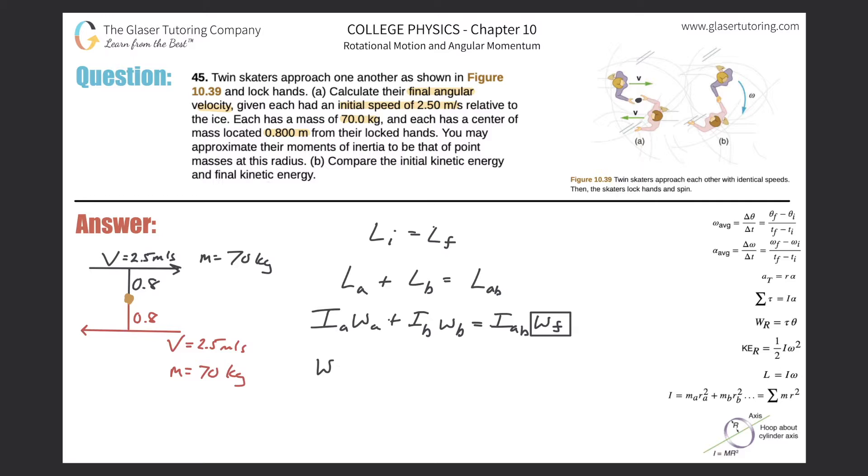So omega F is going to be equal to IA omega A plus IB omega B, all over IAB. So now we have to expand on these things. They told us to take their moments of inertia to be that of point masses at this radius. So it's basically approximated by the hoop about a cylinder axis.